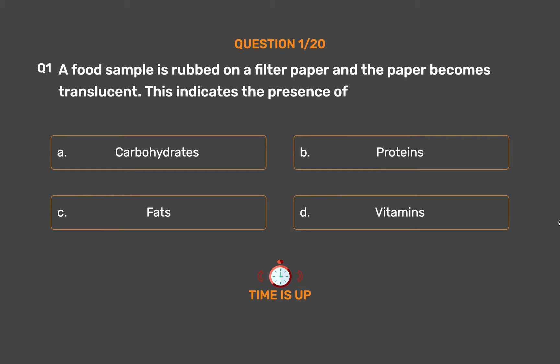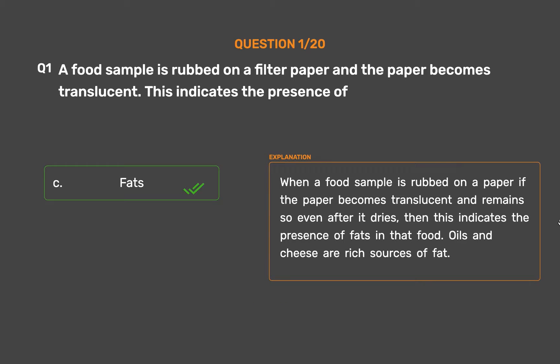The correct answer is Option C - Fats. When a food sample is rubbed on a paper, if the paper becomes translucent and remains so even after it dries, this indicates the presence of fats in that food.